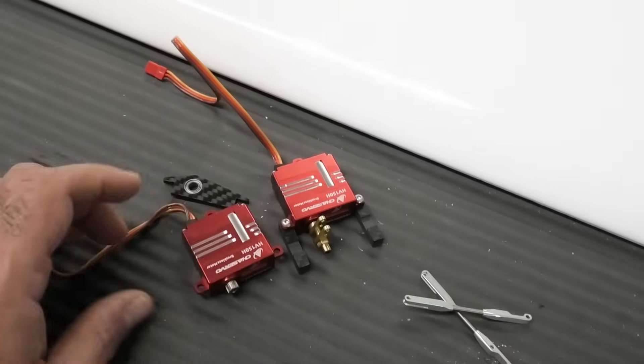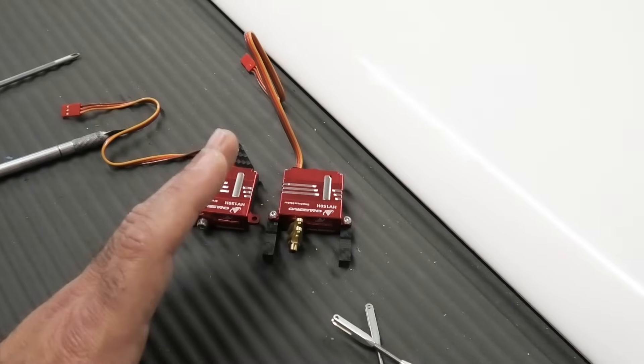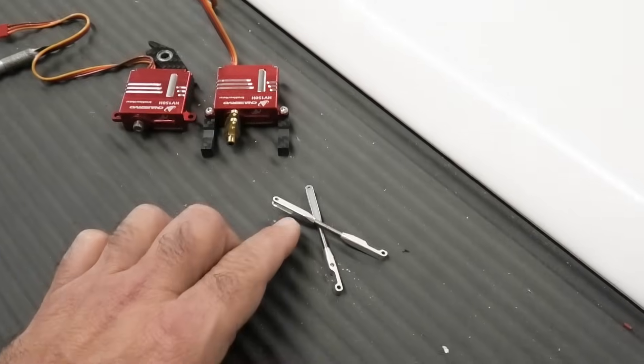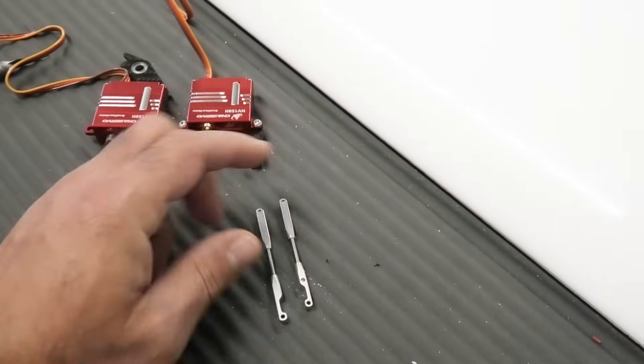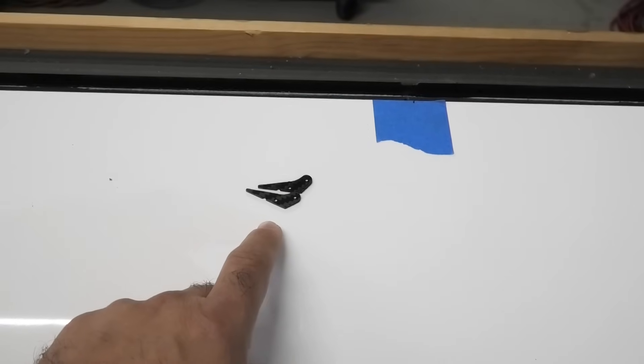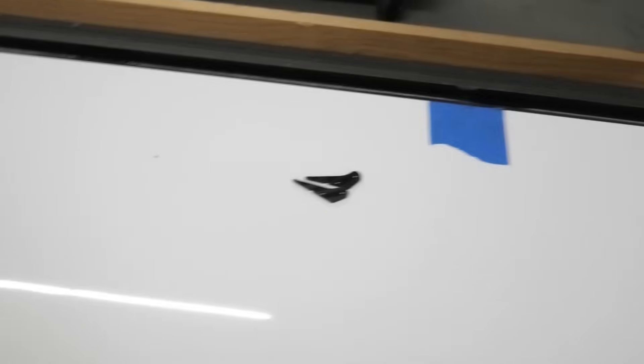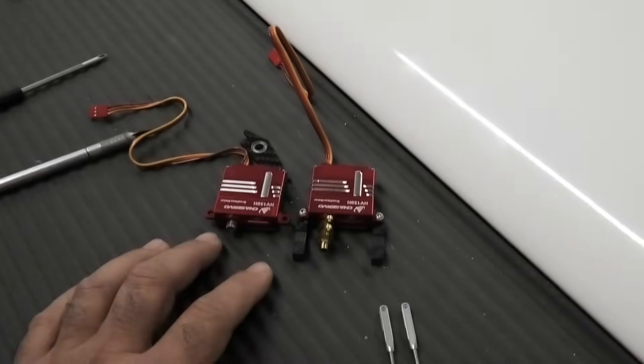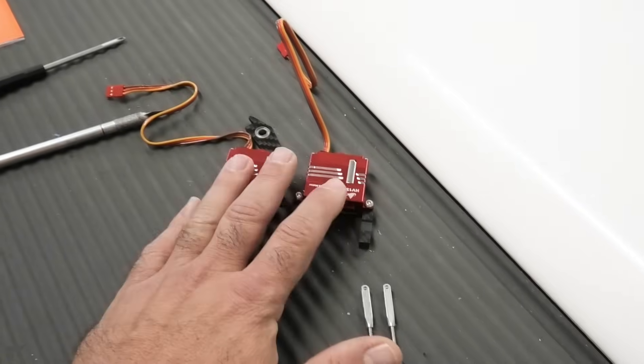So the trick here is everything's got to be identical. The horns have to be in exactly the same position, the arms or the rods have to be exactly the same length, and the horns have to be installed exactly in the same position.